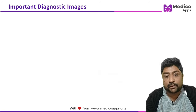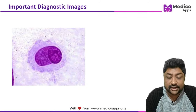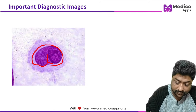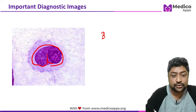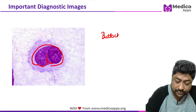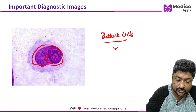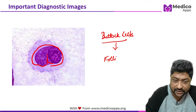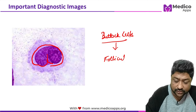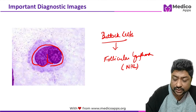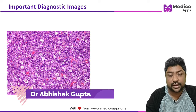RS cells are very important — being able to identify them will help answer most questions. The next image shows buttock cells, which are seen in follicular lymphoma, a kind of non-Hodgkin's lymphoma.